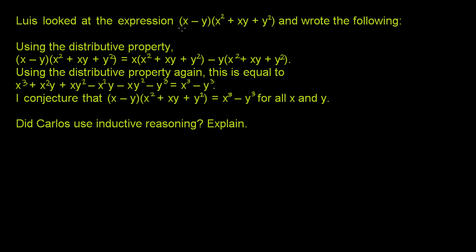Luis looked at the expression (x - y)(x² + xy + y²) and wrote the following. He said, using the distributive property. So he took x minus y and he distributed this expression onto the x and this expression onto the negative y.